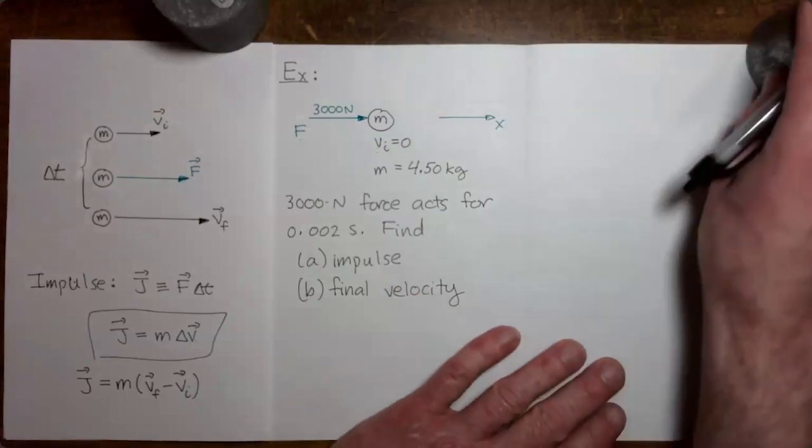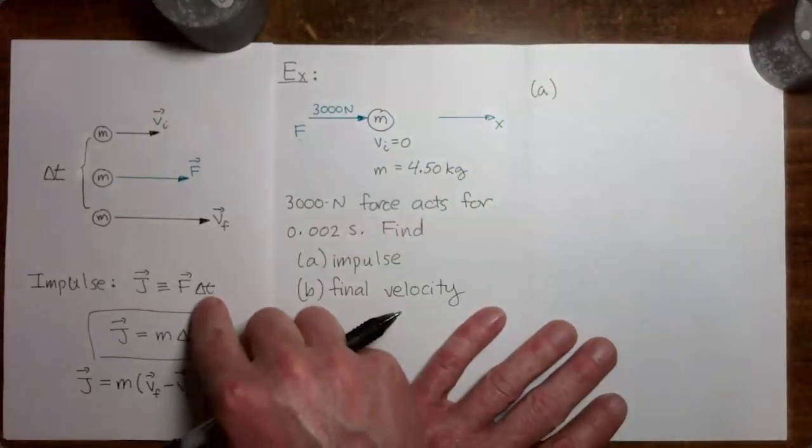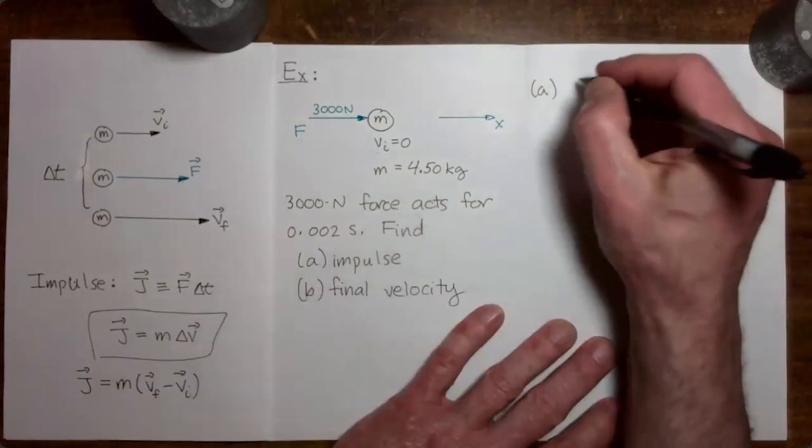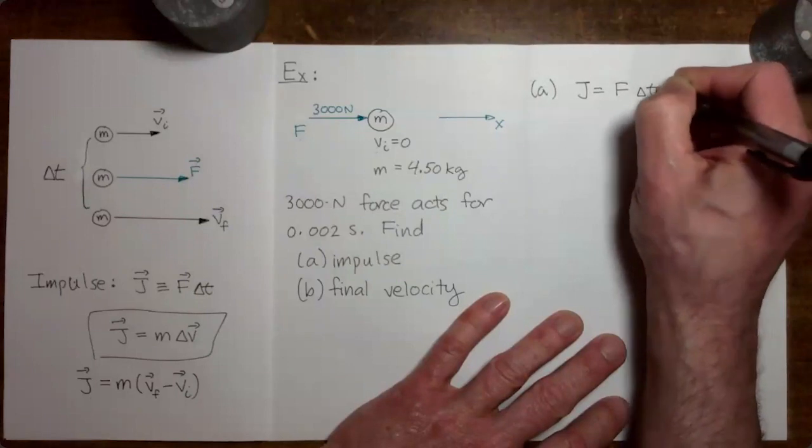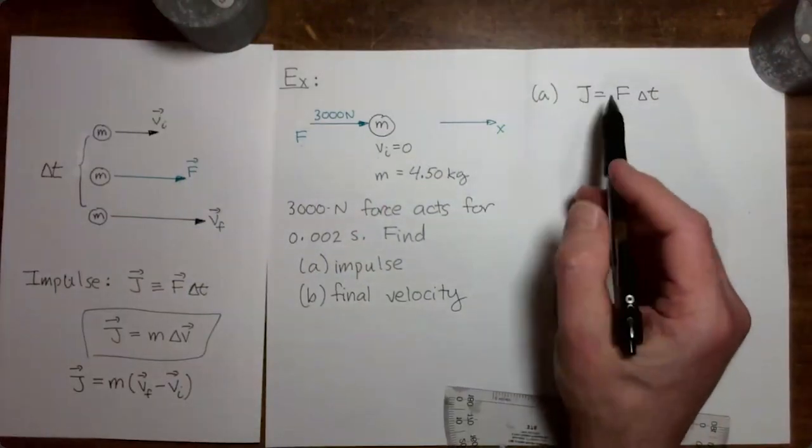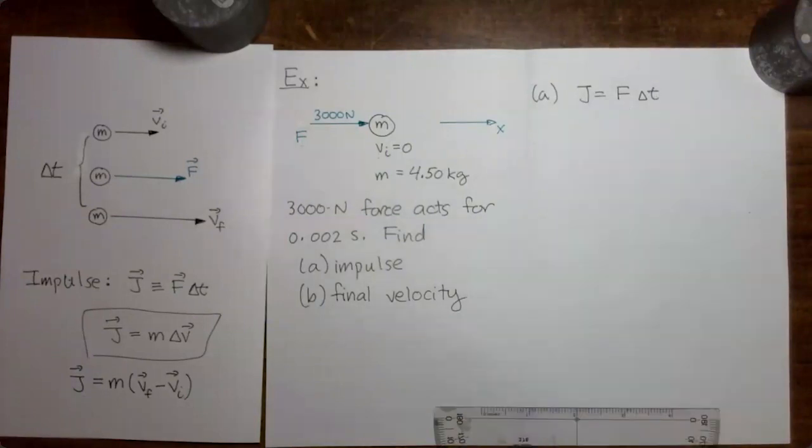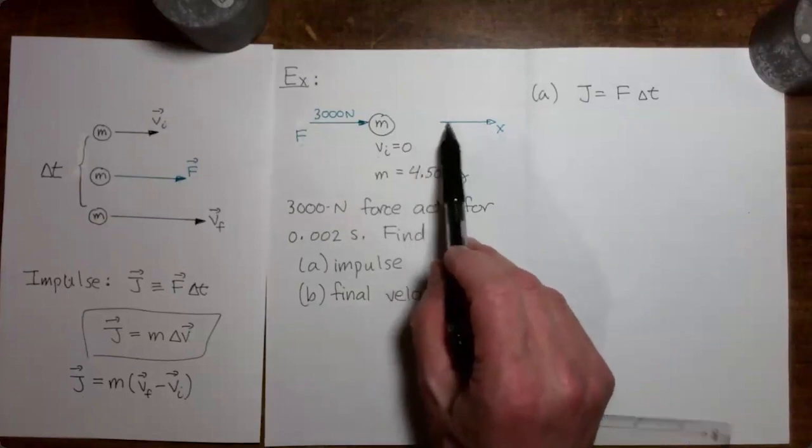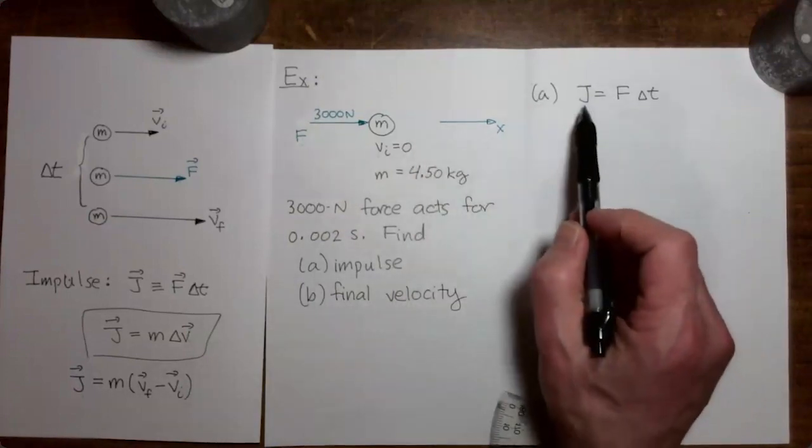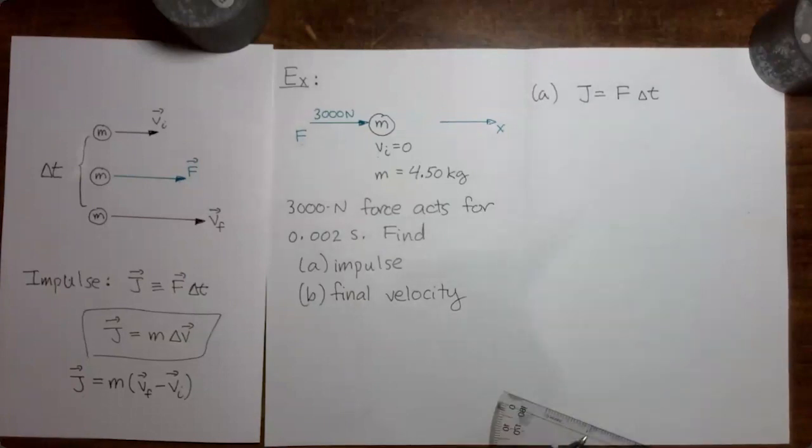So first we need to find the impulse. So coming over here we have the definition of impulse. Impulse equals force times time interval. Notice that I have dropped the little arrow symbols over the impulse and the force. The reason for that is that everything is happening along a single coordinate axis. So we can just use the signs of these quantities, positive or negative, to keep track of the direction.